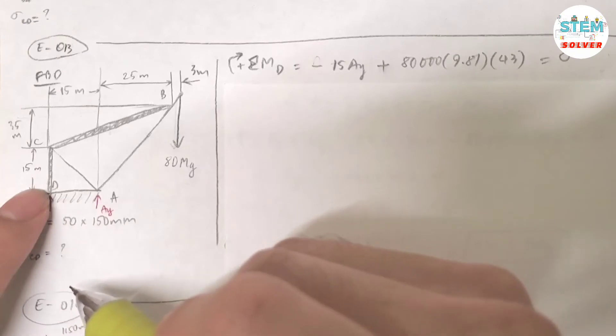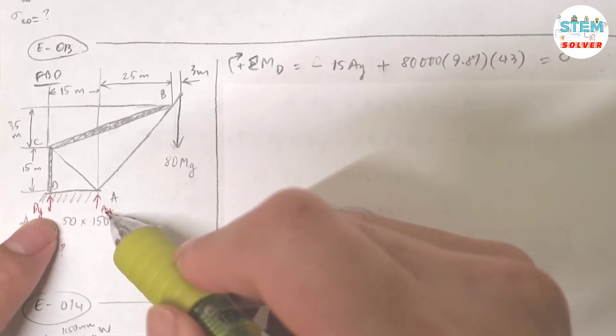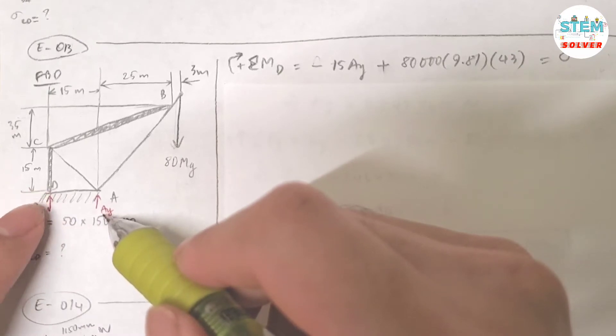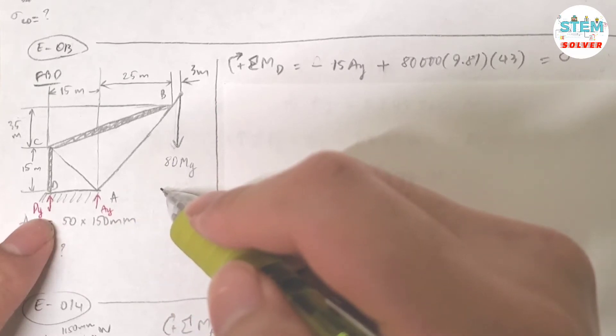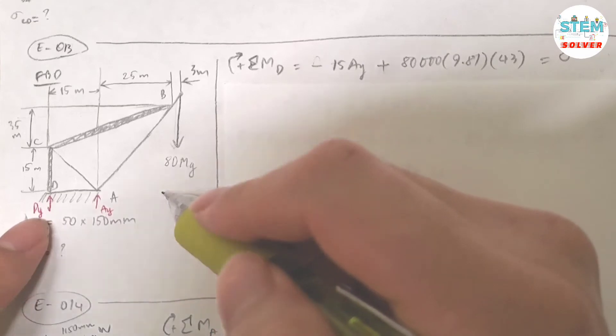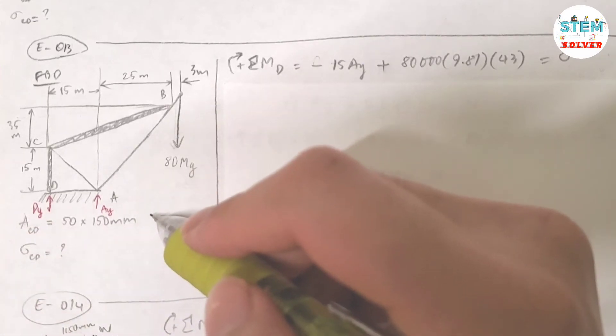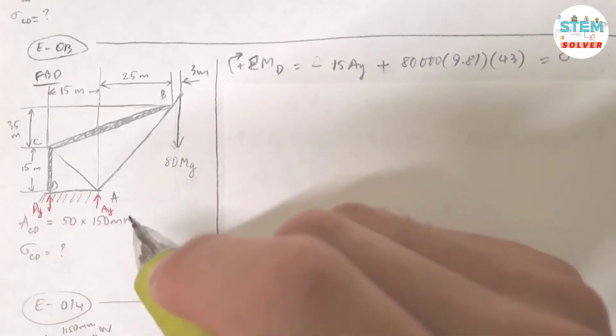If you use the summation about Y, there are 3 unknowns and you cannot do that. You cannot find the normal stress in this one. And there's no forces in the X direction, so you cannot use the summation of X. So the last option is to use the moment.